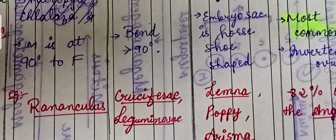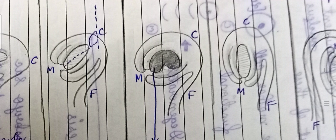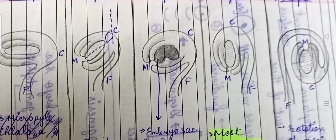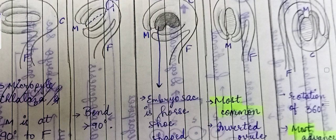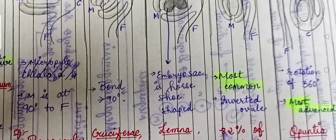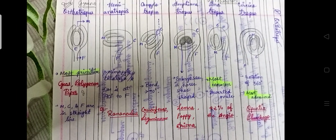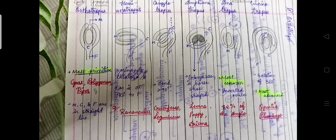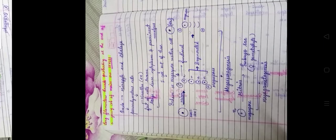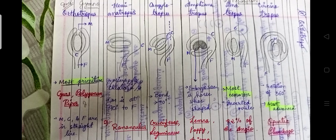The next type is amphitropous (amphianotropous). Here, the embryo sac is horse-shoe shaped. Examples of amphitropous are Lemna, Poppy, and Arisma.